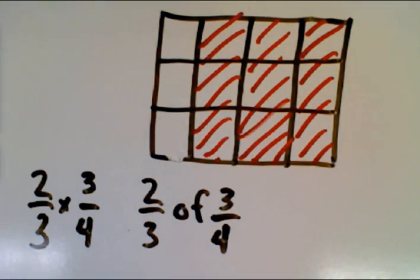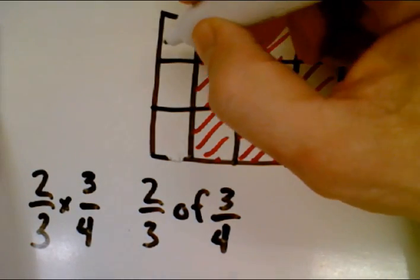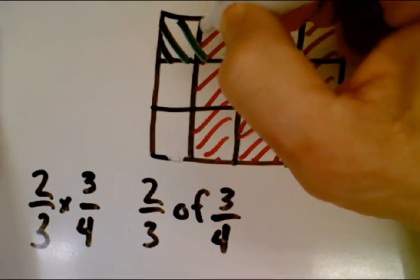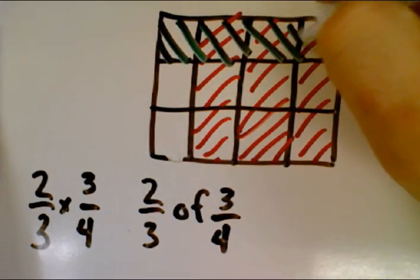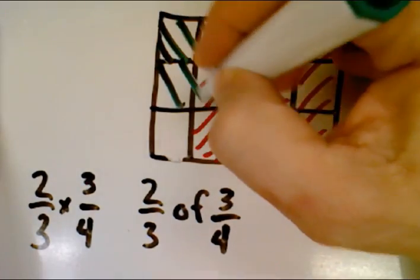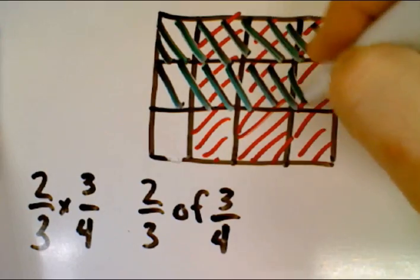Now we've got to represent two-thirds. So we'll do that by shading in two of those thirds. So there's one-third. There is two-thirds shaded in.